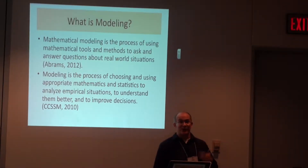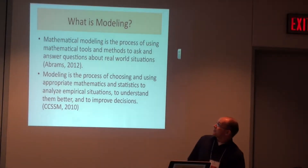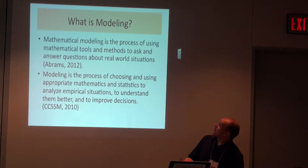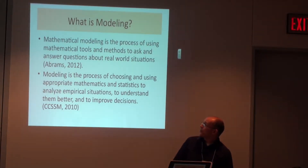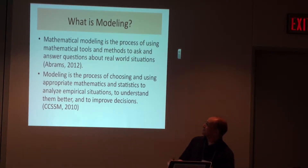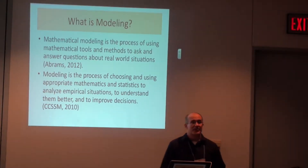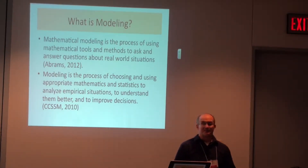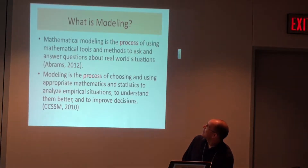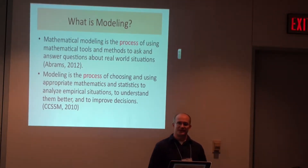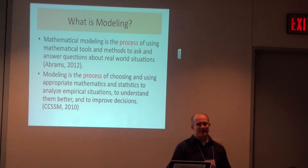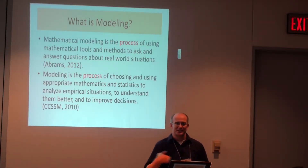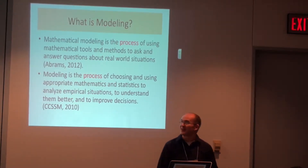So we start looking at definitions of mathematical modeling. I read a whole bunch, and it all comes down basically to things like this. The first is from a gentleman named Abrams: 'Mathematical modeling is the process of using mathematical tools and methods to ask and answer questions about real-world situations.' The one from the Common Core: 'Modeling is the process of choosing and using appropriate mathematics and statistics to analyze empirical situations, to understand them better and to improve decisions.' And I noticed that in all these definitions, one key word was often the same — process. Mathematical modeling has a process that we go through.